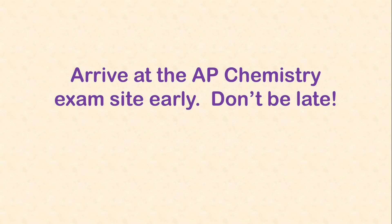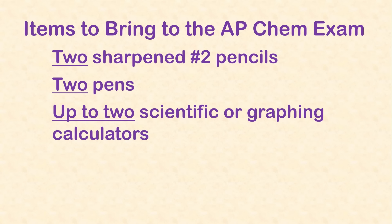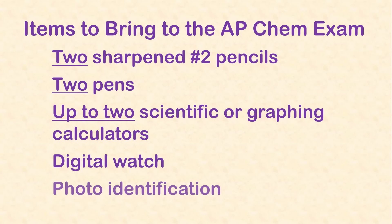Now let's talk about the rules for taking the AP Chemistry exam. Make sure you know when and where you'll take your exam and get there early — if you arrive late, there's a good chance you won't be allowed in. When you arrive, you'll be assigned a seat; you aren't allowed to choose your own. You need to bring two sharpened number two pencils and two pens. Bring your scientific calculator with a full charge or fresh batteries, and you can also bring a second calculator as a backup. Wear a digital watch so you can keep track of time, and bring a photo ID, especially if you're testing at a location that's not your own school.